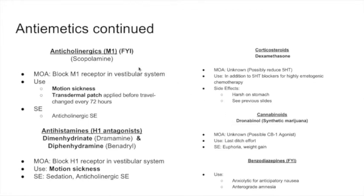Another antiemetic is the anticholinergic scopolamine. Scopolamine is a muscarinic antagonist that specifically targets the M1 receptor. It blocks the M1 receptor in the vestibular system and is used for motion sickness. It comes as a transdermal patch applied before travel and changed every 72 hours — familiar to those who have used it for seasickness on a cruise. Side effects are anticholinergic: dry mouth, blurry vision, and similar effects.